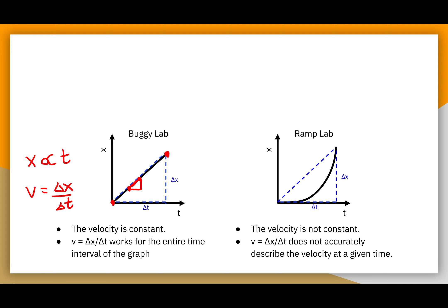The reason is that equation is not how we calculate instantaneous velocity in every situation. The way we calculate velocity at a given instant is by looking at the slope of the position-time graph. The equation v equals delta x over delta t is actually the equation for average velocity — that's why there's a horizontal bar on top of the v, meaning average. It worked great for the buggy lab because our average velocity was the same as our instantaneous velocity.